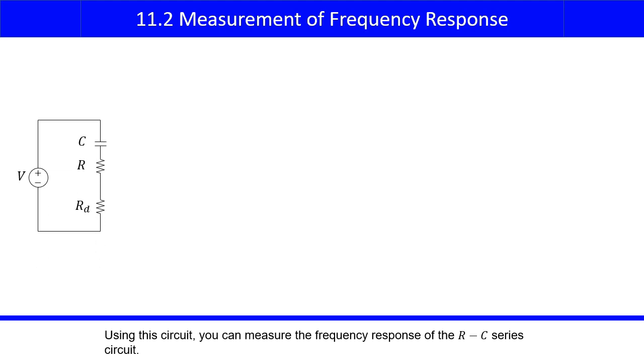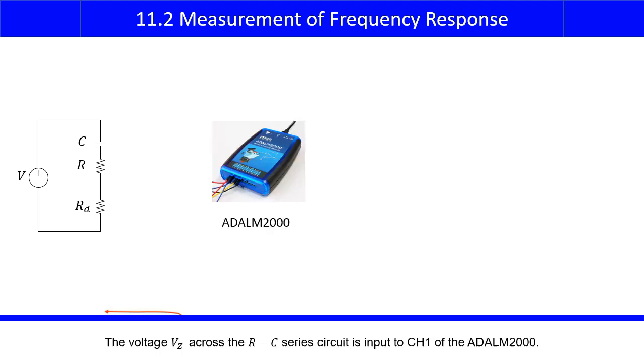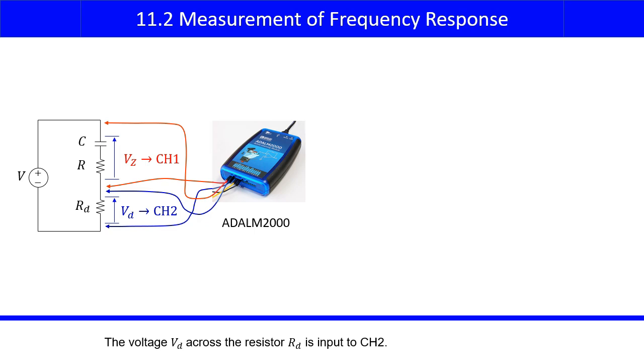Using this circuit, you can measure the frequency response of the RC series circuit. The voltage VZ across the RC series circuit is input to channel 1 of the ADALM2000. The voltage VD across the resistor RD is input to channel 2.